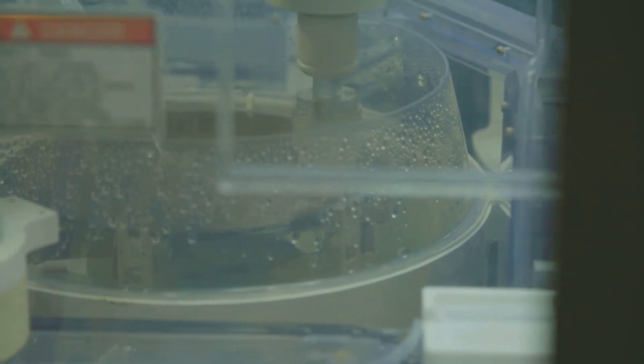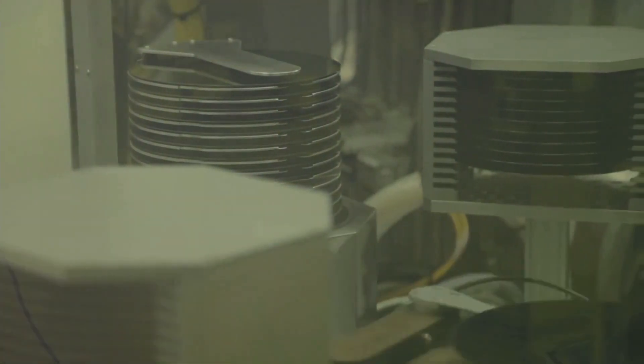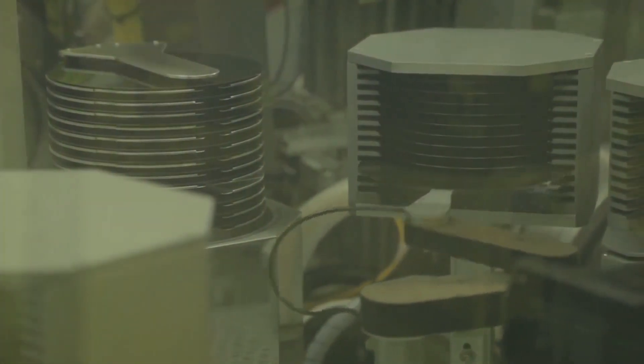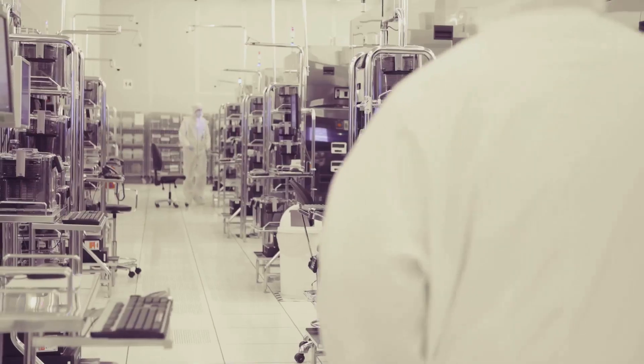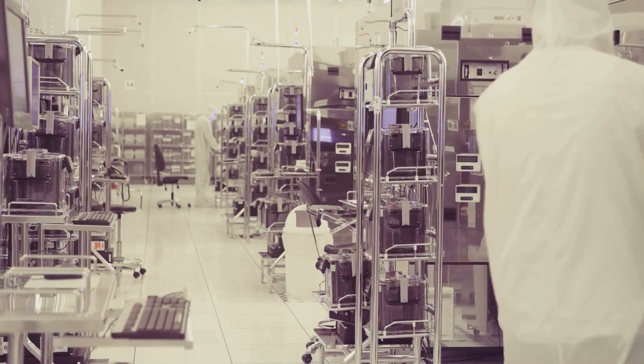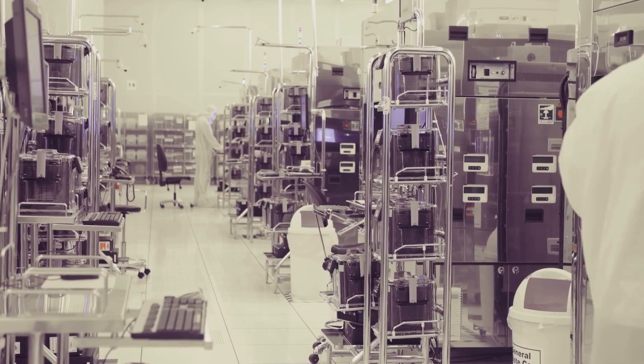The process begins with the melting of high purity polycrystalline silicon in a quartz crucible. This is the first crucial step in the Czochralski method. At the heart of it all is polycrystalline silicon, an essential raw material in the production of single crystal silicon. This silicon is carefully selected for its high purity, as any impurities can significantly impact the quality of the final crystal.